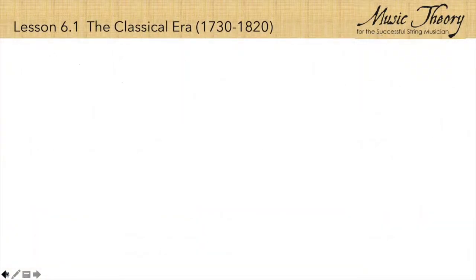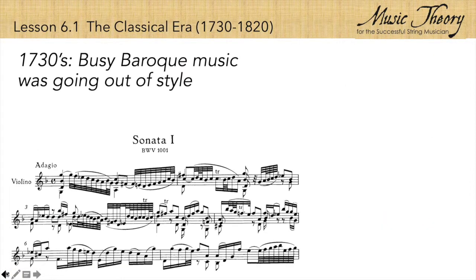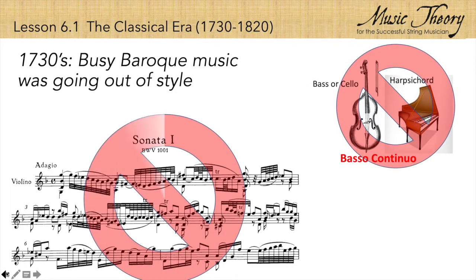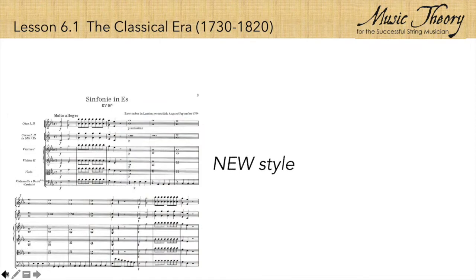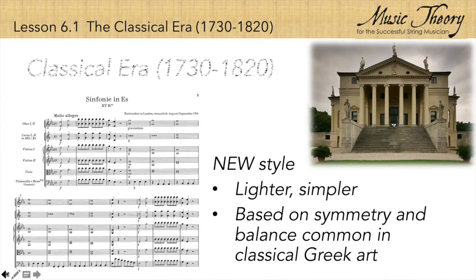By the 1730s, busy Baroque melodies and basso continuo accompaniments were going out of style. They were being replaced by a lighter, simpler music modeled after the symmetry of classical Greek art and architecture. During this new classical era, the people of Europe saw many changes in music and the arts.